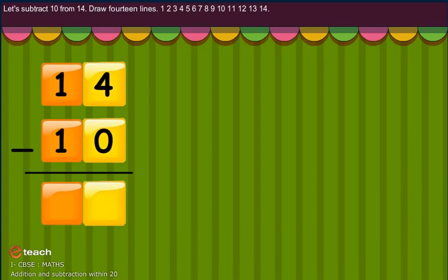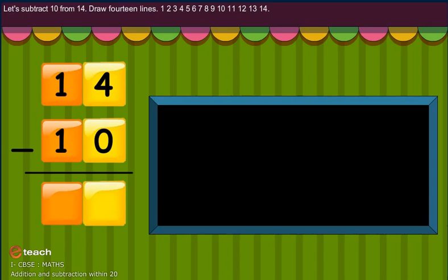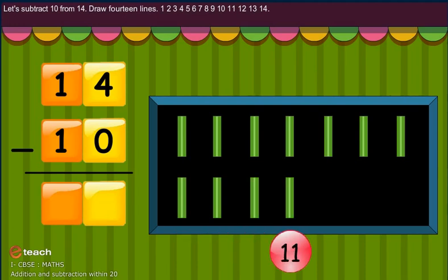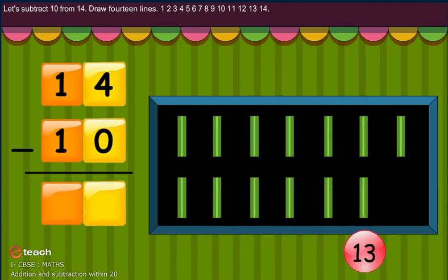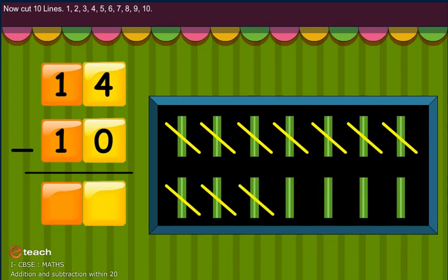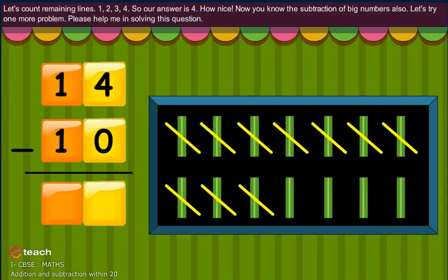Let's subtract 10 from 14. Draw 14 lines: 1, 2, 3, 4, 5, 6, 7, 8, 9, 10, 11, 12, 13, 14. Now cut 10 lines. Let's count the remaining lines: 1, 2, 3, 4. So our answer is 4.